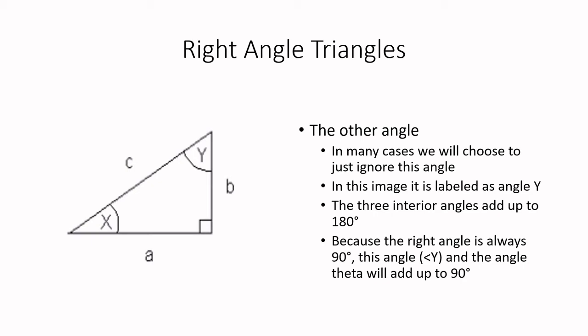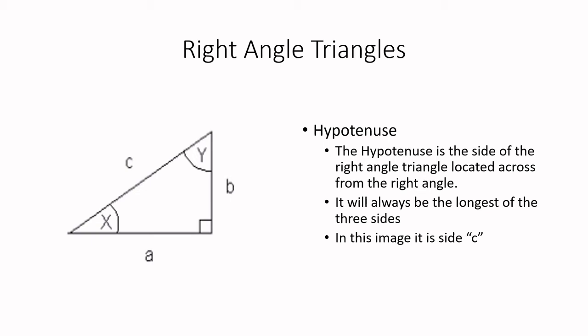So those are our three angles. And now let's move on and talk about our three sides. What do we call that? So the first of the three sides that we're going to look at is what we call the hypotenuse. So the hypotenuse, the first bullet there says the hypotenuse, this is the side of the right angle triangle located across from the right angle itself. So notice there's the right angle there. And across the triangle from it is what we call the hypotenuse. In this image, it is side c.